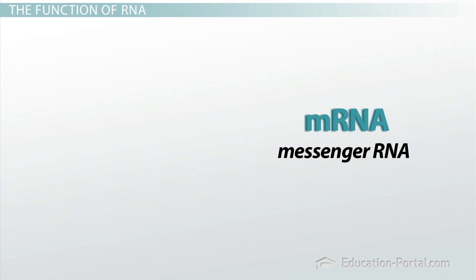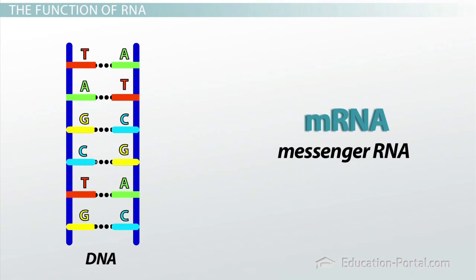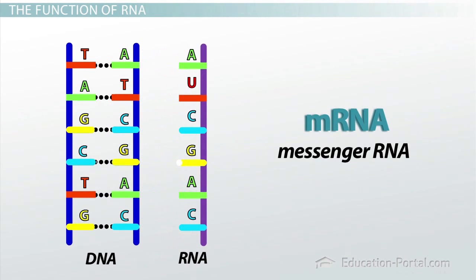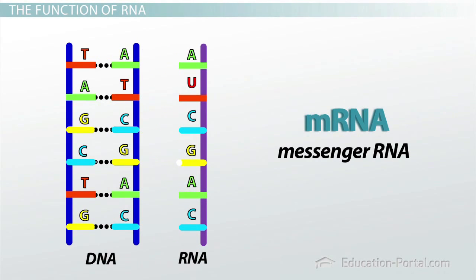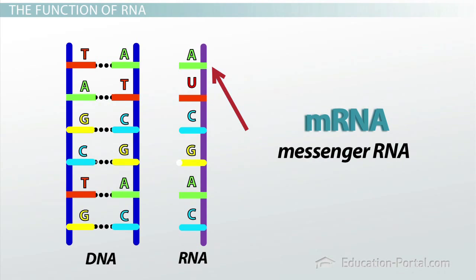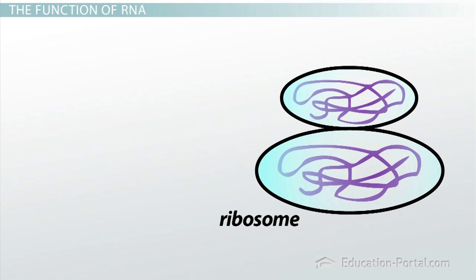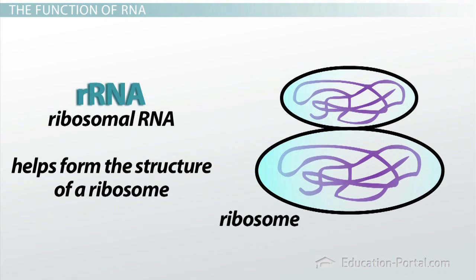One type of RNA is called messenger RNA, or simply mRNA. mRNA is created when the DNA recipe is copied in the first step of the central dogma. The information found in mRNA can be interpreted by using two other forms of RNA in the second step of the central dogma. mRNA is translated into protein at a cellular structure known as the ribosome. A second type of RNA helps form the structure of a ribosome. This type of RNA is called ribosomal RNA, or rRNA.